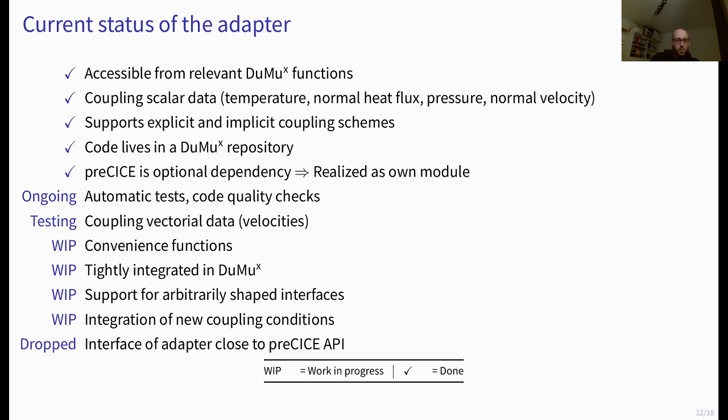It's like there's been I think testing last time and still testing because it's extended to several space dimensions, this coupling of vectorial data. Work in progress is this convenience function that you might need for simplifying the coupling that we are working on, the tighter integration into DuMuX, and at the moment what is really like work in progress for me is like to use or to work with arbitrarily shaped interfaces not just flat interfaces as you have indicated before. And the integration of these new coupling conditions for example that I have shown. So at the moment I just work with the very classical Beavers-Joseph-Saffman conditions but we work hard to get the new coupling conditions of Eggenweiler and Rybak very soon too.